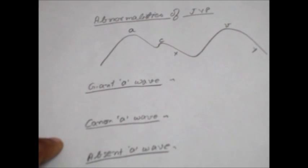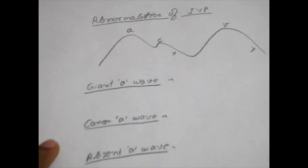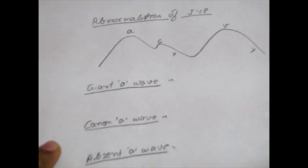Now any kind of obstruction leading to increased amount of force required by the right atrium to push the blood into the ventricle will lead to increased height of the A-Wave, which is known as a Giant A-Wave.